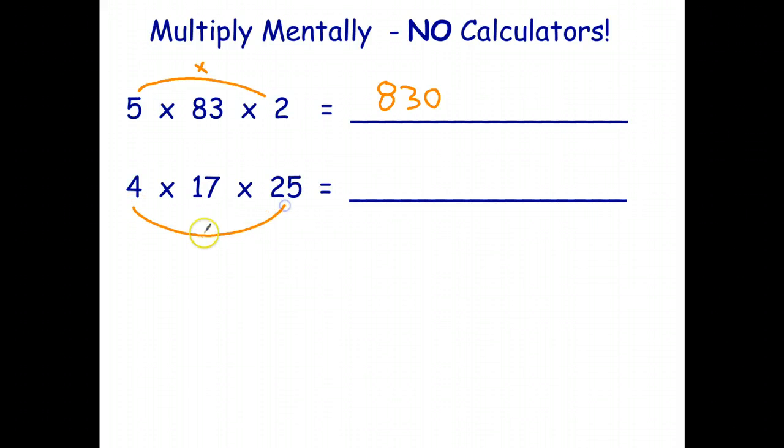Once again, 4 times 25. We can multiply those first gives us 100. And 17 times 100 is 1700.